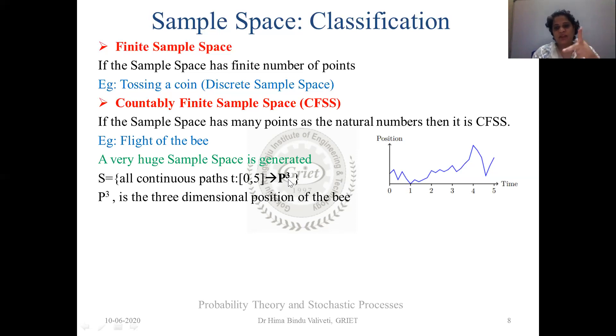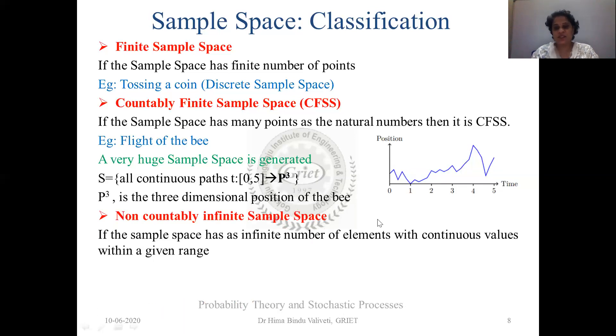So here the sample space is written as all continuous paths. P is given as the time. Time is between 0 and 5 and p cube. Whenever you're talking about the flight of a bee, it is basically you have a three point flight. It's not just two points. You have a third point that comes up over your x, y and z axis. So your bee basically moves around in the three axis. So we have represented it as p cube. So p cube is the three dimensional position of the bee. So when you talk about this, you start from the zeroth minute and then you go about with 0.0001 minute. Then 0.0002 or 0.0003 so on and so forth. If you go about it, it is going to create a very huge sample space. But it is countable in nature. So just like our natural numbers. This is countably infinite sample space, which is continuous in nature again.